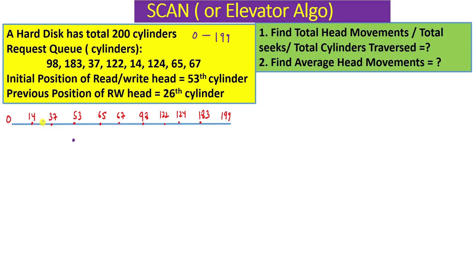Since the head was previously at cylinder 26 and is now at cylinder 53, it is moving from lower to higher cylinder numbers — that is the direction. This is one way the direction can be given; alternatively, the question may simply state the head is moving towards higher cylinder numbers. We need to find the total number of head movements and the average number of head movements.